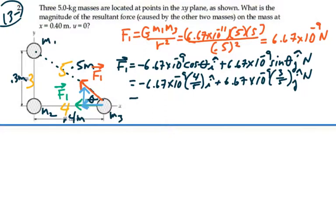So this gives us, this is equal to negative 5.34 times 10 to the minus 9 i plus 4.00 times 10 to the minus 9 j newtons. So that is our total force F1 as a vector.